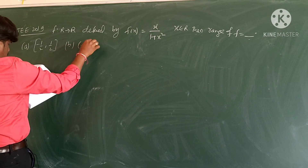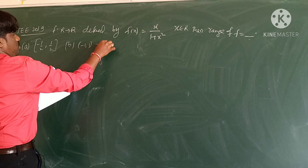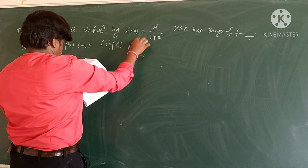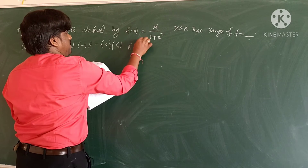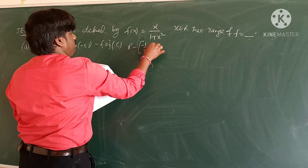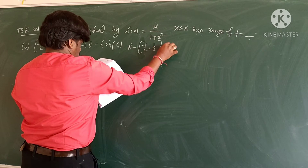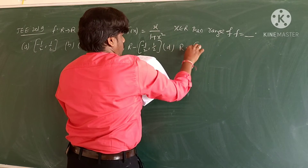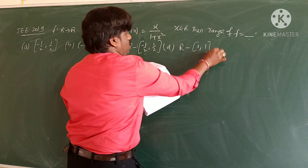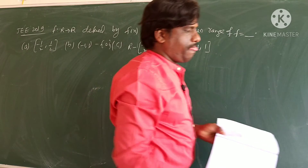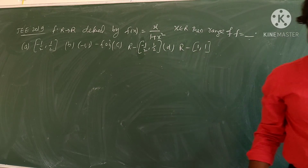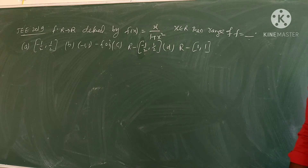The options are: option A: [-1/2, 1/2] closed interval; option B: (-1, 1); option C: ℝ minus (-1/2, 1/2); option D: ℝ minus [-1, 1].